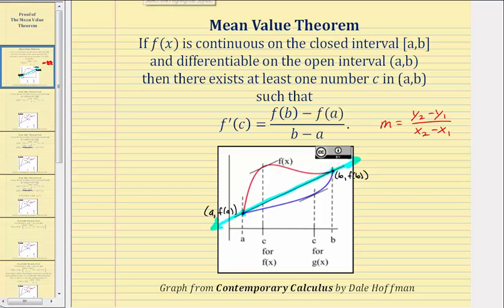So if we look at the graph of the red function shown here, notice that at this x value of c, the slope of this tangent line, which would be f prime of c, is the same as the slope of the secant line. Now looking at the blue function, notice that at this x value of c, the blue function has a tangent line with a slope of f prime of c, which again is the same as the slope of the secant line.